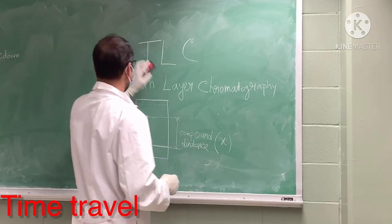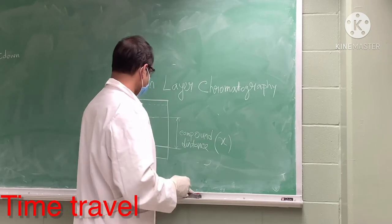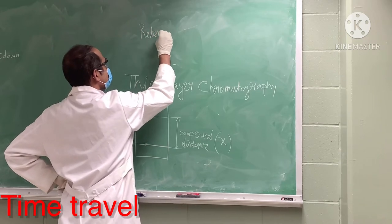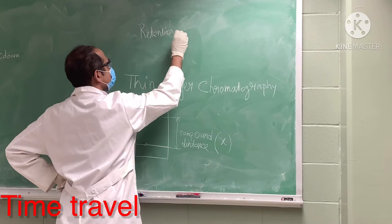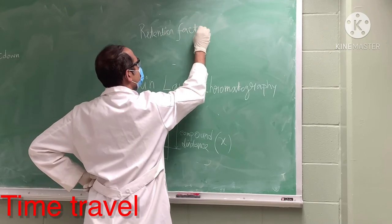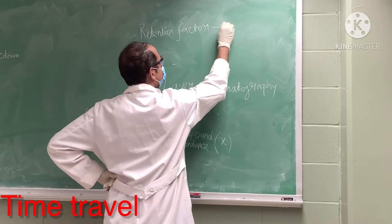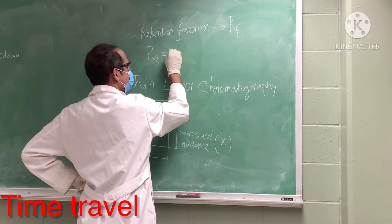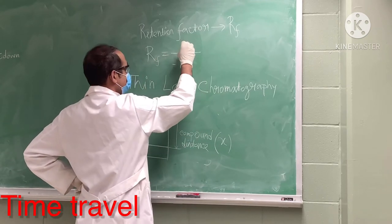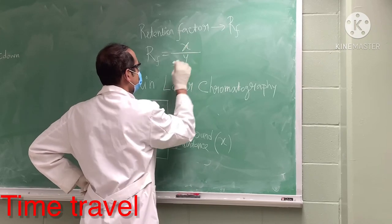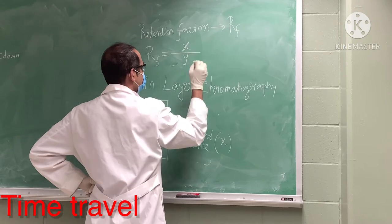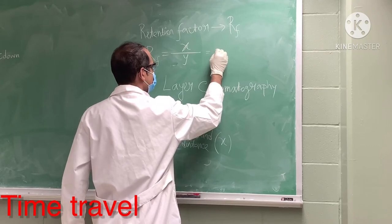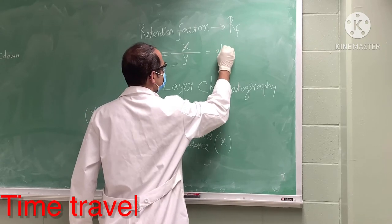From the compound distance X and solvent distance Y, we get an idea about the retention factor. The retention factor, or RF, is a ratio — it equals the compound distance over the solvent distance: RF = X/Y. Since the compound distance is always smaller than the solvent distance, the RF value will always be less than 1, and since it is a ratio of distances, it has no unit.